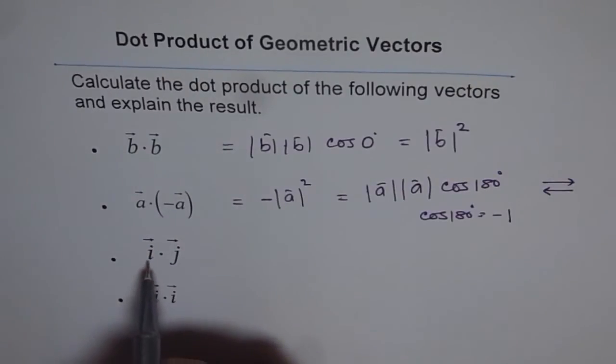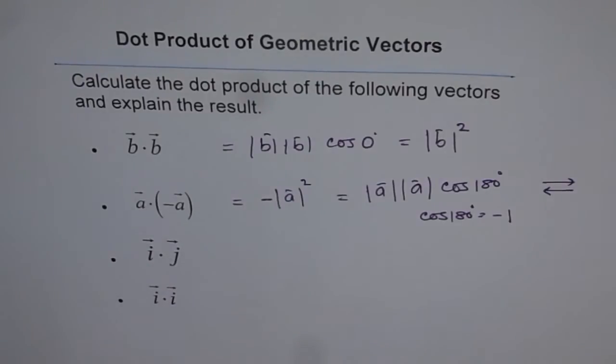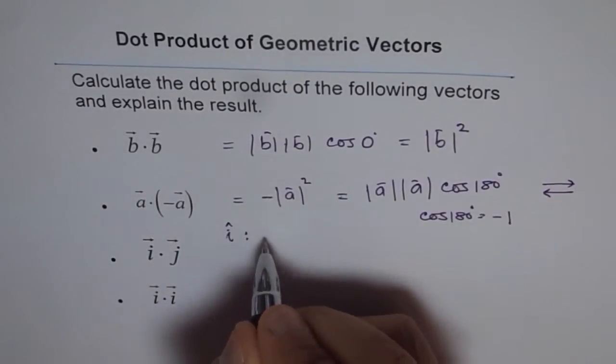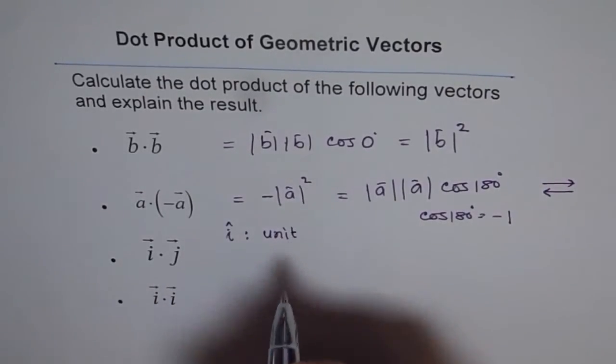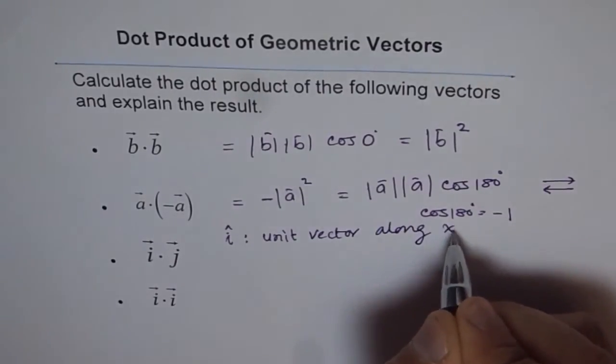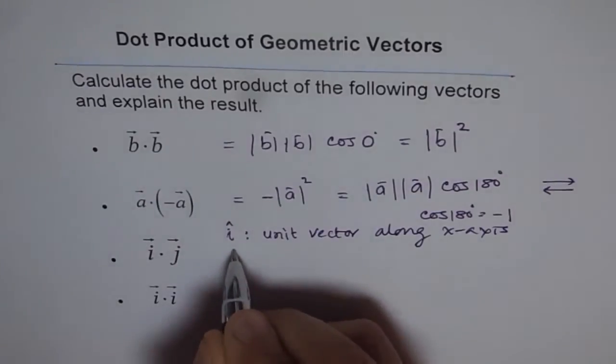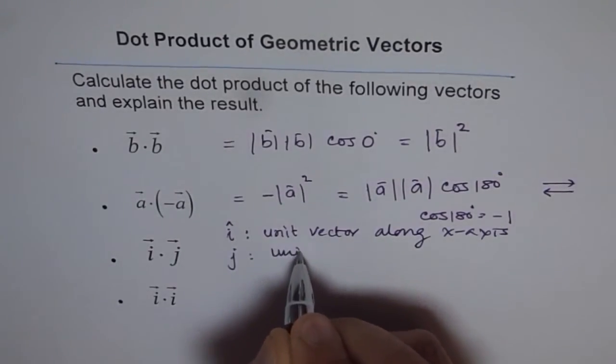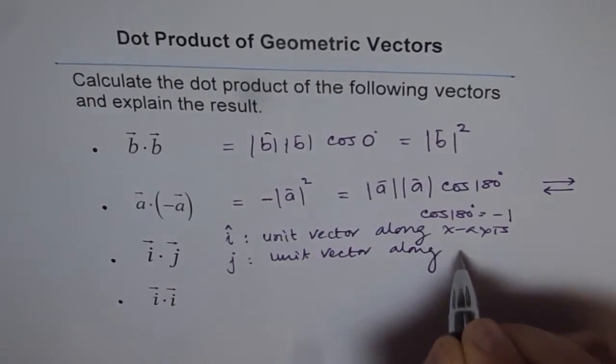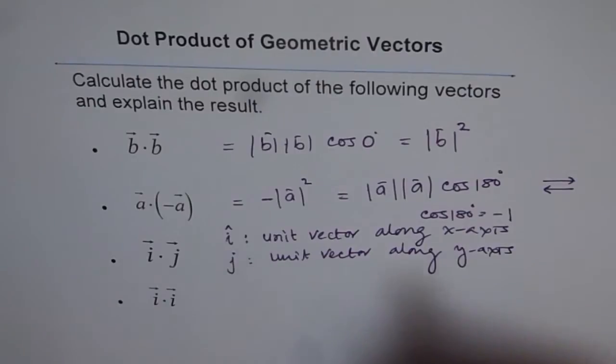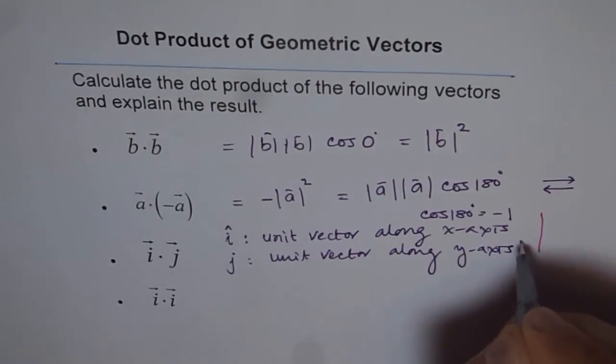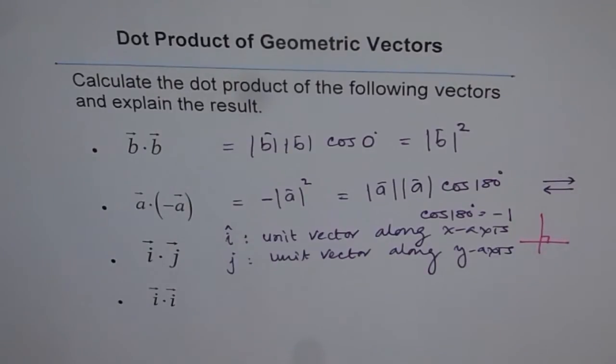Now here we have vectors i and j. So what are i and j? i is a unit vector along x-axis, and j is a unit vector along y-axis. And as you know, these axes are perpendicular, so they are orthogonal. So we have 90 degrees angle between them.